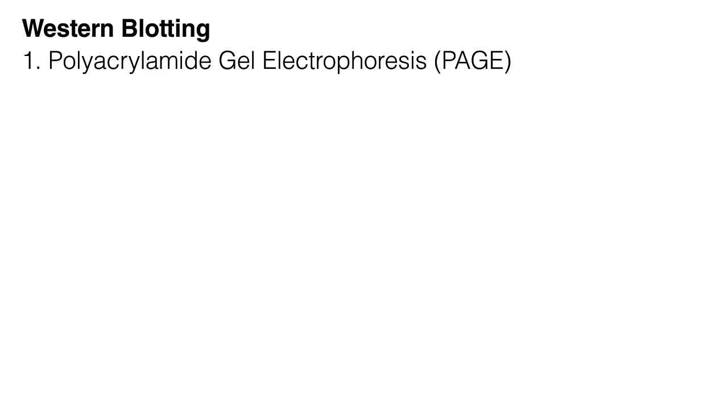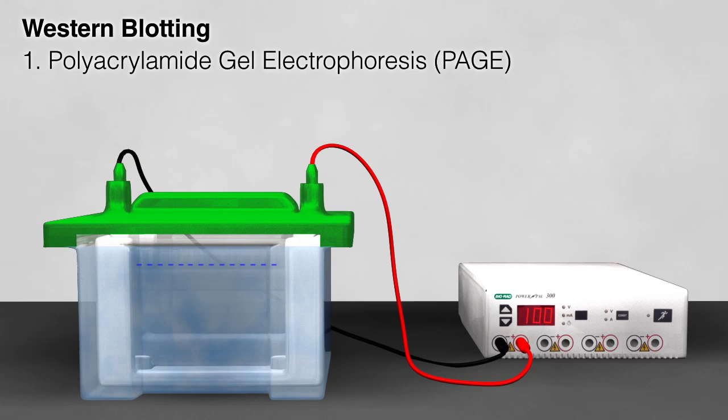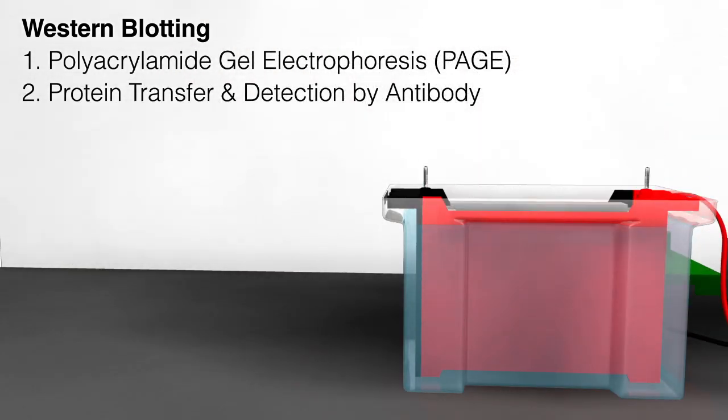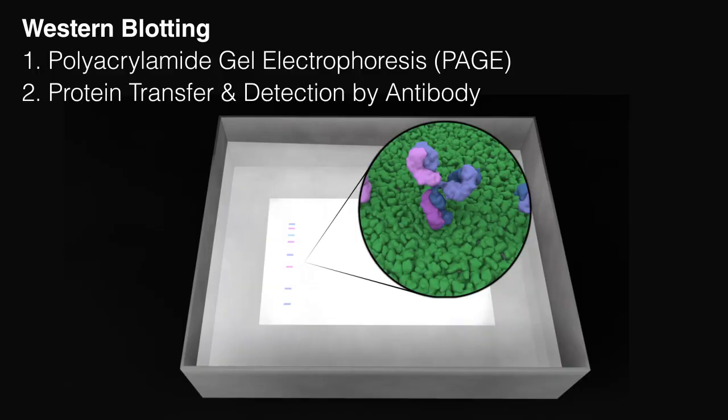Western blotting can be divided into two phases. In the first phase, proteins are loaded onto a gel and separated from one another using an electrical current during polyacrylamide gel electrophoresis, or PAGE. Then, in the second phase, the separated proteins are transferred onto a membrane and the protein of interest is visualized using a protein-specific antibody.